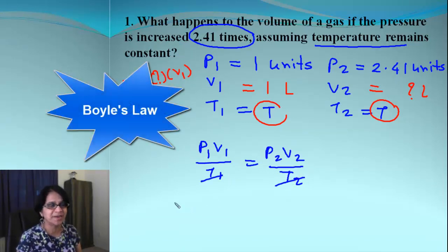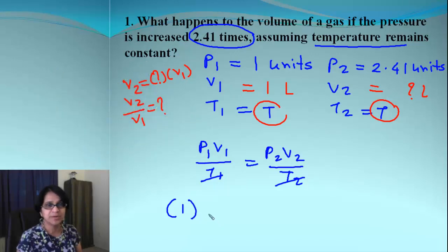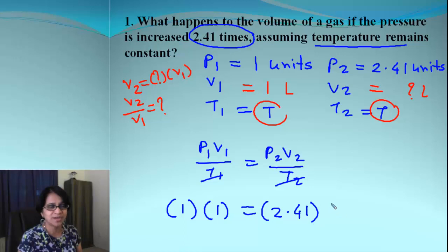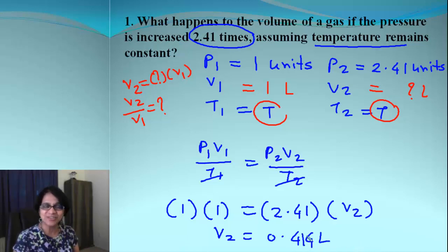And now we need to plug and chug the values which we've got for each of those. Pressure is one, volume is one, and over here pressure is 2.41, and then over here this is V2. So when we actually solve for V2, what do we get? We get 0.414 liters.